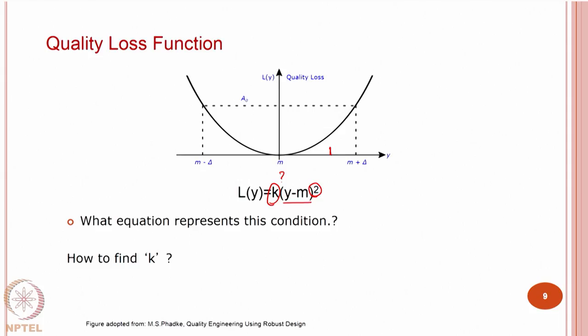If you do not have a loss function, the quadratic loss function is a good place to start. The quadratic term is taken care of by y minus m squared, but how do you decide the constant k? Because k will again influence the result. If k is 2 and y minus m is 3 units, then 3 squared times 2 is 18. If k were 3, it could be 27. So this k plays an important role — how do you decide on k?